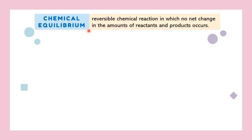According to the name of this topic, Chemical Equilibrium, it is a condition in the course of reversible chemical reactions in which no net change in the amounts of reactants and products happens.